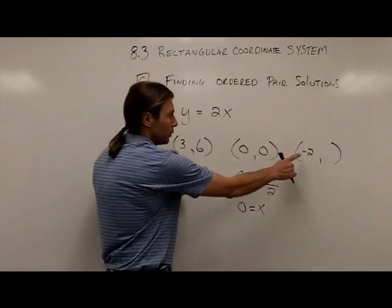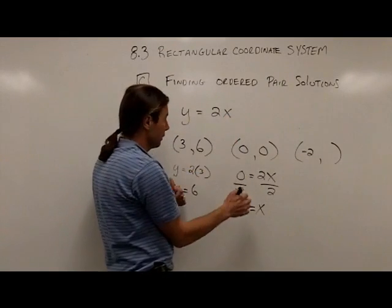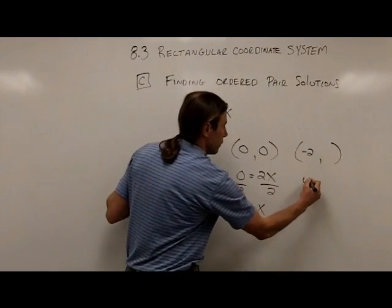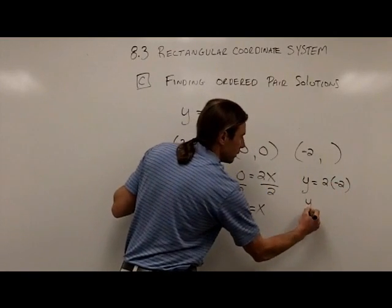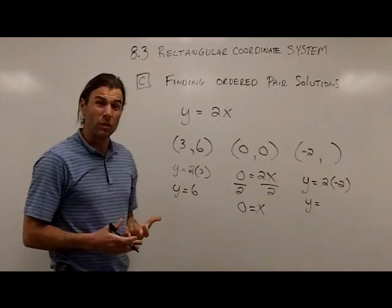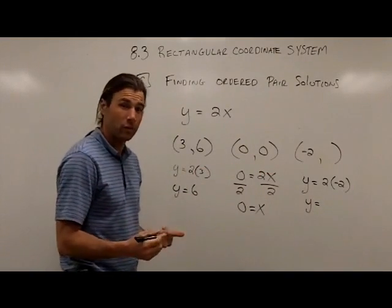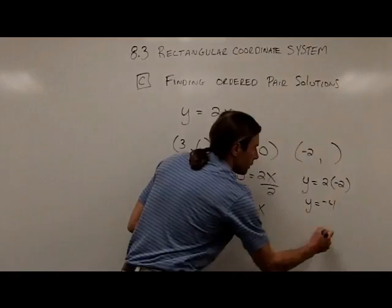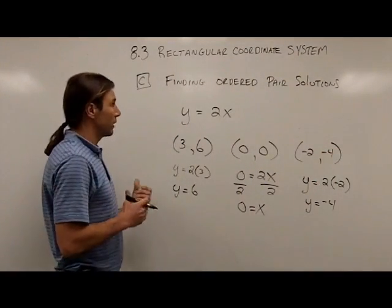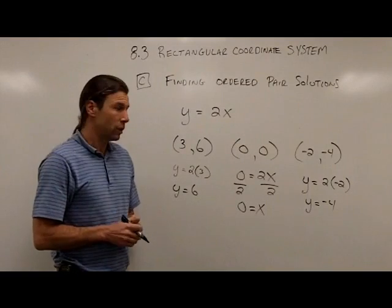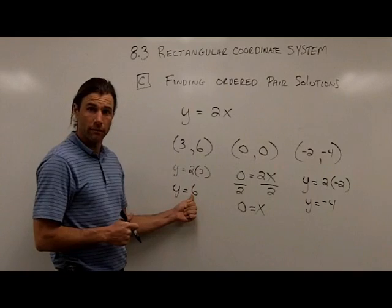The last one, I'm going to put a negative 2 in. This is in the first place, so I'm putting it in for x. So I would write my equation, y equals 2 times negative 2. All I have to do is simplify the right side. 2 times negative 2 is going to give me negative 4. So there's my other value. So that's how you find an ordered pair solution. You plug one of the values into the equation, and figure out what the other value needs to be.